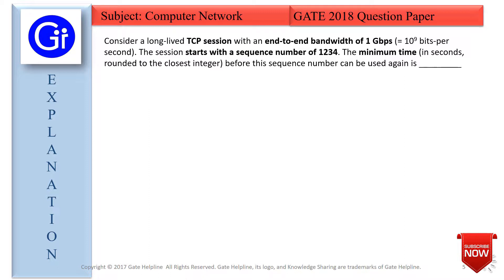So the question is: Consider a long-lived TCP session with an end-to-end bandwidth of 1 Gbps. The session is starting with a sequence number of 1234. We need to find the minimum time in seconds, rounded to the closest integer, before the sequence number can be used again.